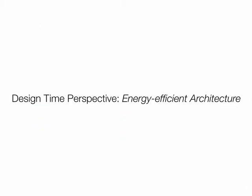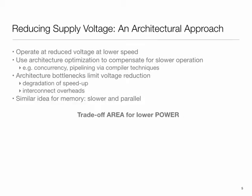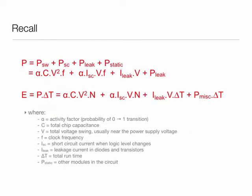The basic idea is voltage has square dependence on power. If you look at frequency, it's the inverse of delay — and gate delay goes up as voltage goes down, or another way of saying it: frequency is roughly proportional to voltage, first order. Therefore, power actually has a cubic dependence on voltage, potentially. That's a very attractive place to focus on. So the idea is to operate at a reduced voltage: as I reduce voltage, the maximum possible frequency goes down, so I have to reduce frequency. To compensate, we do architecture optimization.